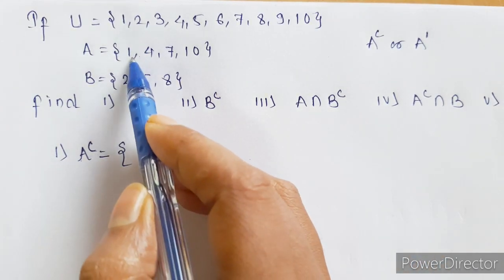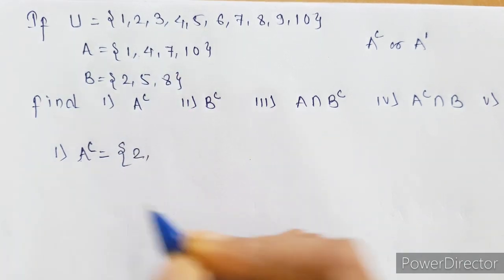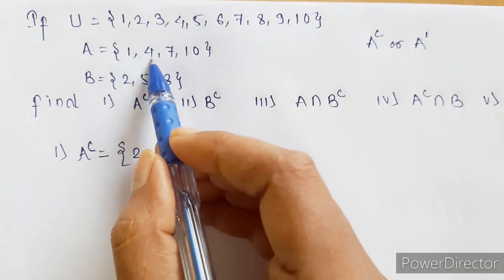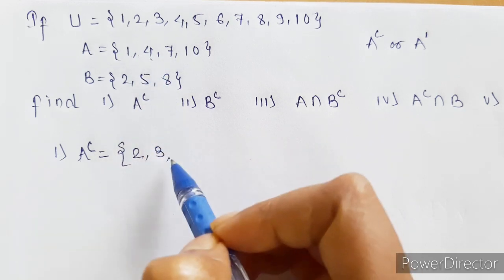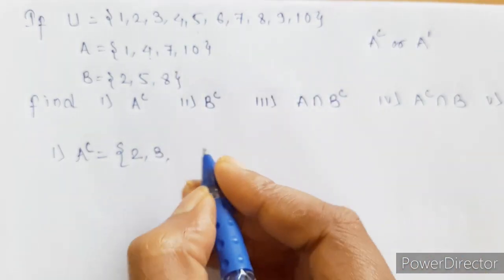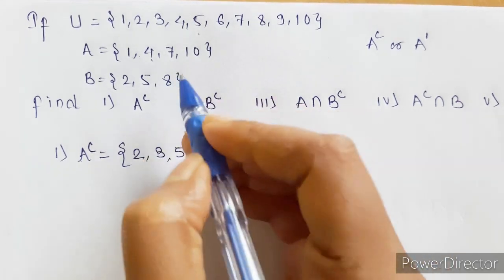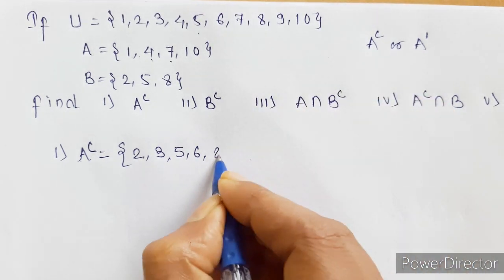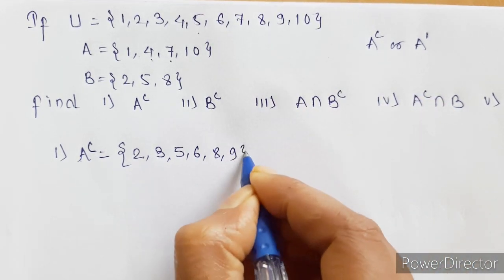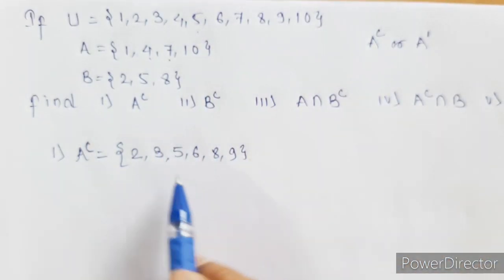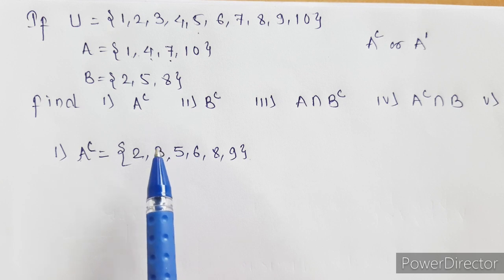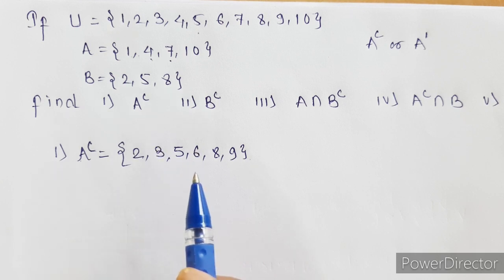So, which elements are in U but not in A? 1 is in A. 2 is not in A, so 2 will come in complement. 3 is not in A, so 3 will be in complement. 4 is in A, so 4 will not come in complement. Then 5, 6. 7 is in A, so 7 is not going to come in complement. 8 is not in A. 9 is also not in A. 10 is in A, so 10 will not come in complement. So complement contains all elements in the universal set that are not in set A.